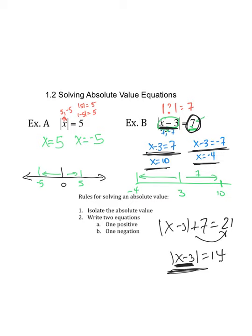x minus 3, which is the value of the expression in the absolute value, equals the positive 7 and the negative 7. Good to go?